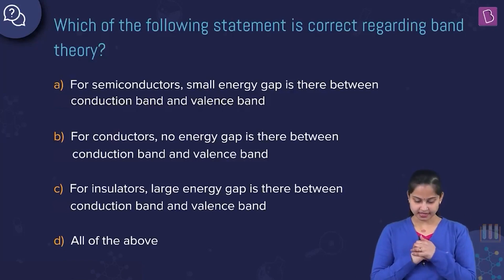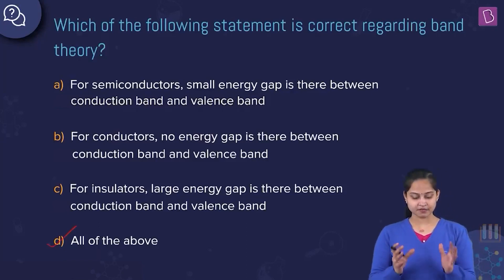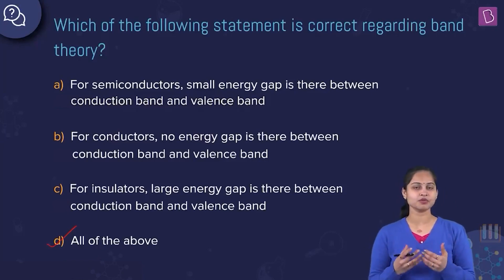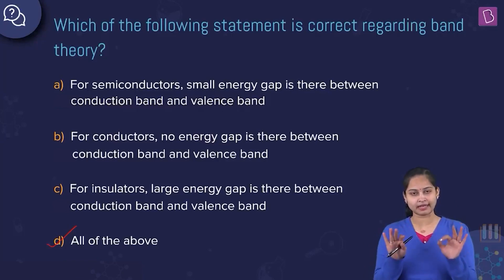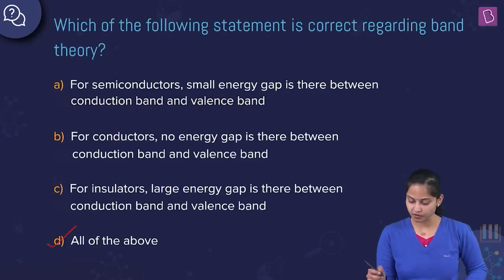Option D is absolutely the right answer to this question. If we first talk about conductors — conductors are mostly metals — they do not have any energy gap between the valence band and the conduction band because of overlapping. Let me draw an energy level diagram to illustrate this.